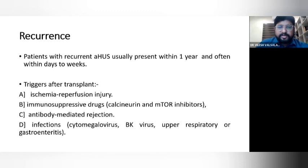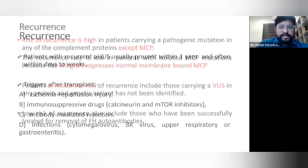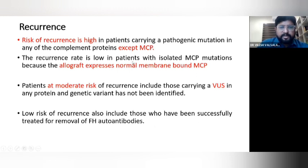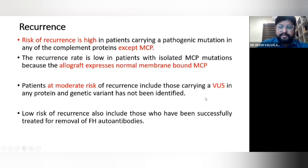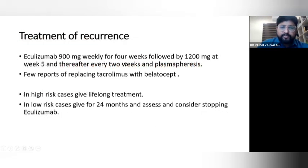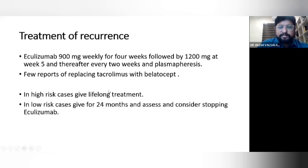Recurrence of aHUS usually presents within the first year or often within days to weeks. Triggers include ischemia-reperfusion injury at bench preparation, immunosuppressive drugs like CNI/mTOR, antibody-mediated rejection, and infections like cytomegalovirus, BK virus, upper respiratory tract infections, or gastroenteritis. Recurrence risk is highest for most variants except MCP, which has low recurrence because the allograft expresses normal membrane-bound MCP. Treatment of recurrence: continue eculizumab 900 mg weekly for 4 weeks, then 1200 mg at week 5 and every 2 weeks, plus plasmapheresis in the initial phase. In high-risk cases, eculizumab is continued lifelong; in low-risk cases, it can be reassessed and potentially stopped after 24 months. One dose of 900 mg costs approximately 5 lakh Indian rupees.